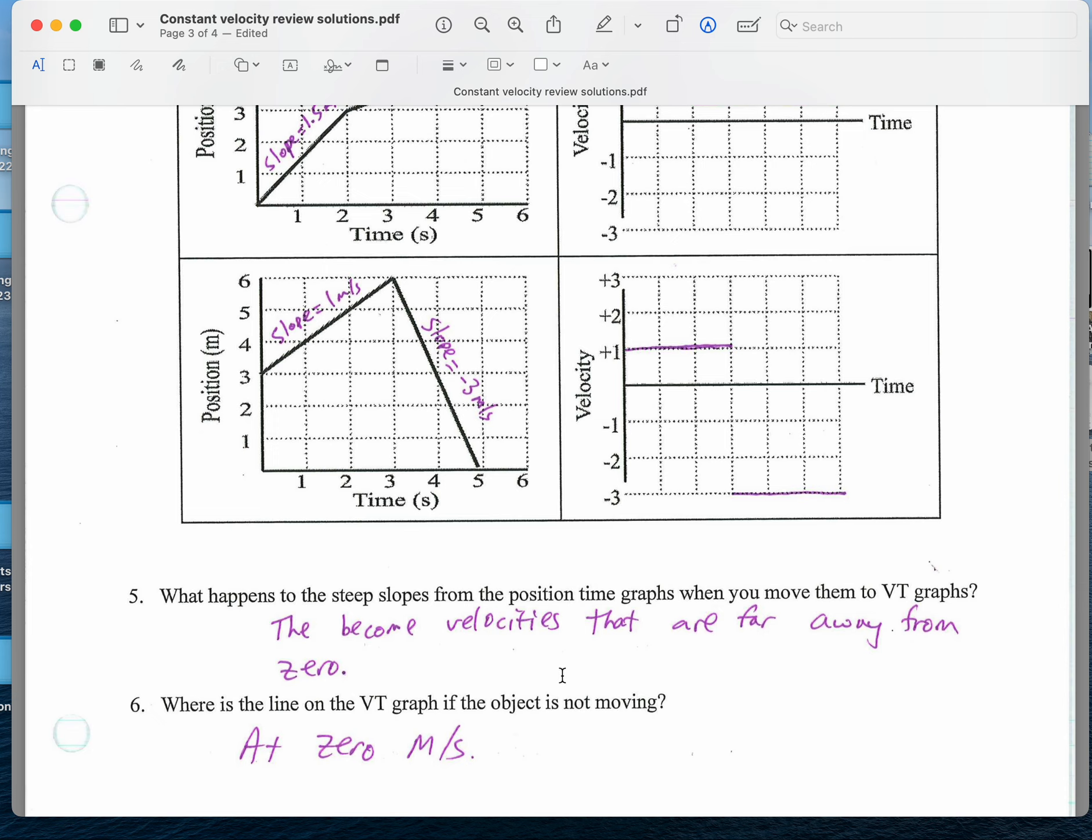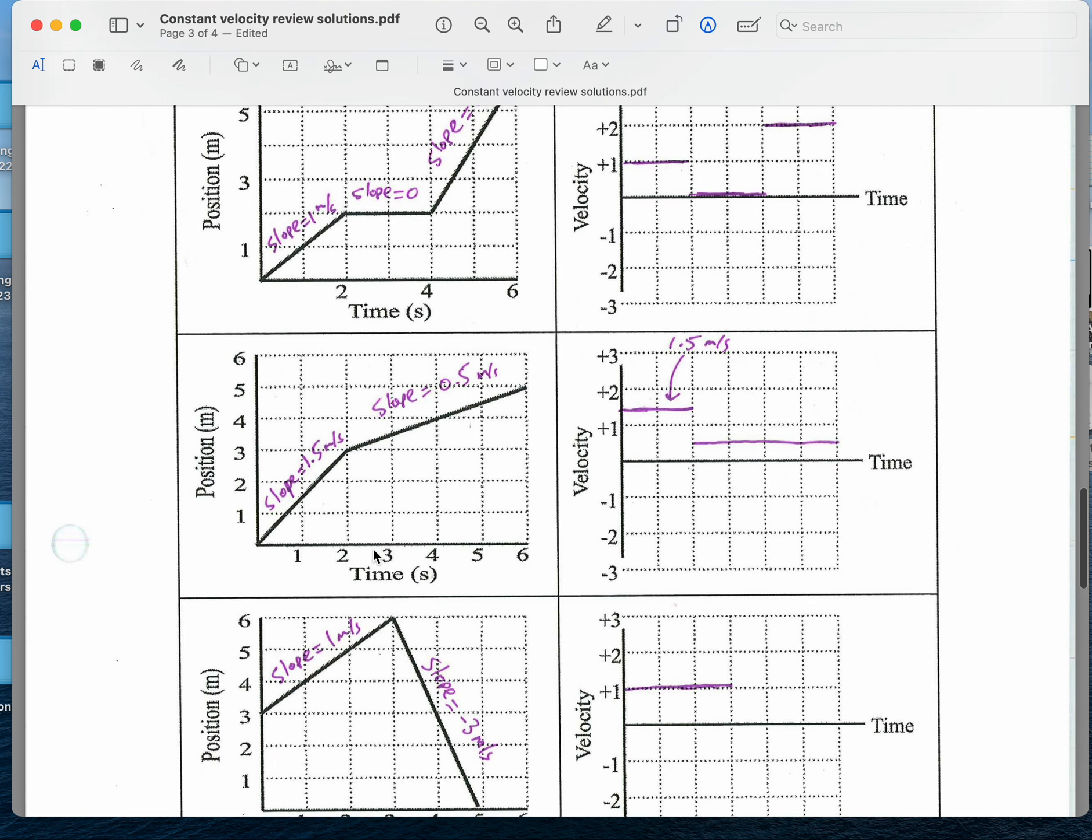What happens to the steep slopes from the position time graphs? When you turn them into velocity time graphs, they become velocities that are pretty far away from 0. So this is a very steep slope. This is a line that's very far away from 0. This is the 0 line. Where's the line on the velocity time graph if the object's not moving? That's at 0 meters per second. So in this region, the slope is 0. So the velocity is 0.